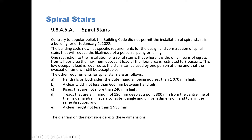The other requirements for spiral stairs are as follows: A) you require handrails on both sides, the outer handrails being not less than 1070mm high; B) a clear width not less than 660mm between the handrails; C) risers that are not more than 240mm high; D) treads that are a minimum of 190mm deep at a point 300mm from the center line of the inside handrail, and have a consistent angle and uniform dimension, and turn in the same direction.